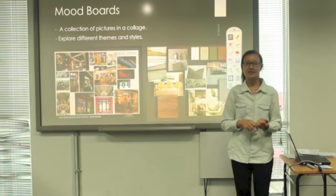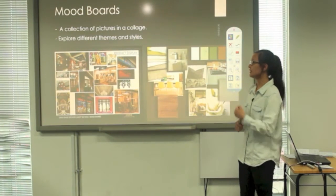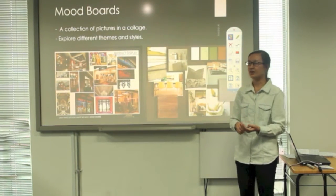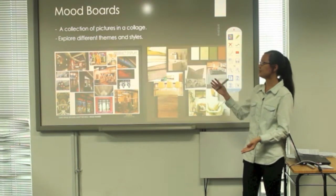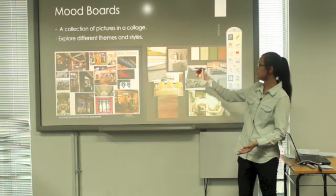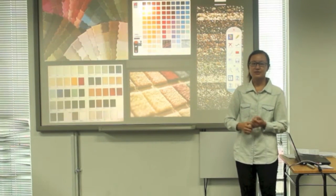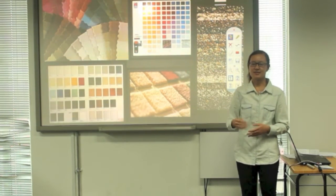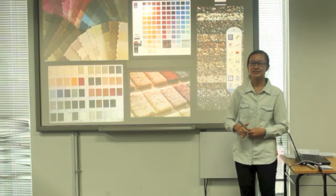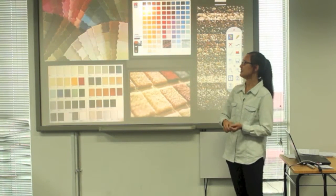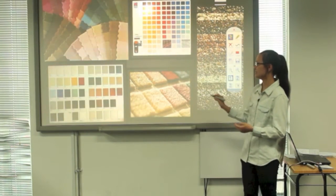Mood boards are a collection of pictures and samples. It is used to explore different themes and styles. The mood board on the left focuses more on the overview. It's more of an inspirational mood board. Whereas on the right, it focuses more on the details such as the materials, colors, and various finishes. Mood boards are a really great tool used by interior designers. It helps them to convey their ideas more easily. These are the samples provided by the suppliers to the interior designers to help them create their mood boards, such as fabric textures, colors, and different types of materials.